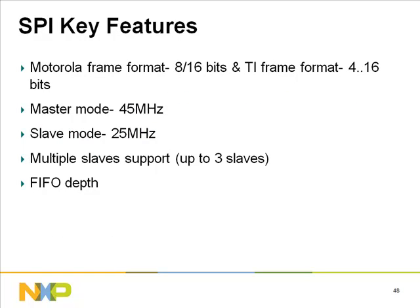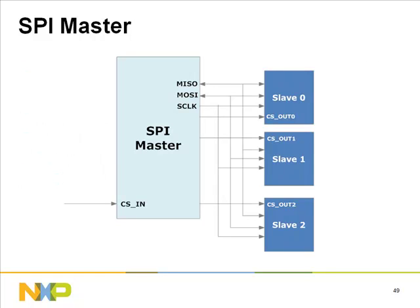The SPI module is used for synchronous serial data communication with devices supporting the SPI or SSI protocol. Key features: supports Motorola and TI frame formats; maximum speed in master mode is 45 MHz and slave mode is 25 MHz; multiple slave support up to 3 slaves; separate 64-word deep TX and RX FIFOs. The SPI master supports up to 3 chip selects — active high frame sync for TI SSI or active low chip select for SPI. It operates in normal transmission mode or sequential slave mode.